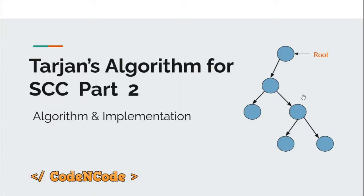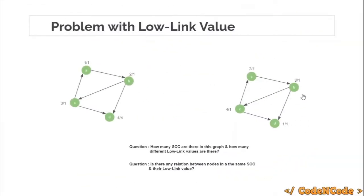Hello guys, this is Code and Code and this is the 25th lecture of the Graph Theory Part One series. This is Part Two of Tarjan's algorithm for strongly connected components. In the first part, we saw how we can use low link values to calculate strongly connected components, but we also saw that low link values completely cannot be used to find SCCs because there were some problems with it.